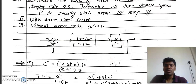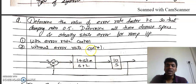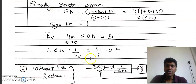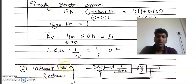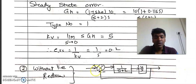The second part of the problem is the same thing but without error rate control. Without error rate control means ke = 0, so the block (1 + s·ke)/(s+2) becomes 1/(s+2). The diagram will simply have 1/(s+2) and 10/s with R(s) as input and C(s) as output.